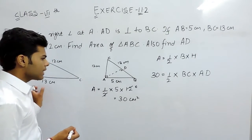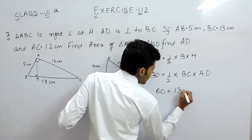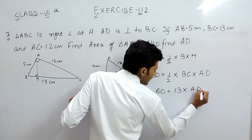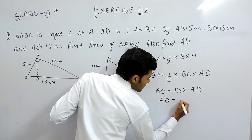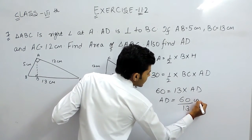BC is given to be 13 cm. So 60 is equal to 13 multiplied by AD and AD will be equal to 60 by 13 cm.